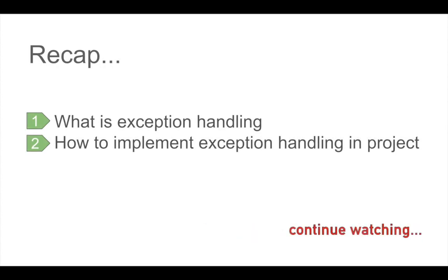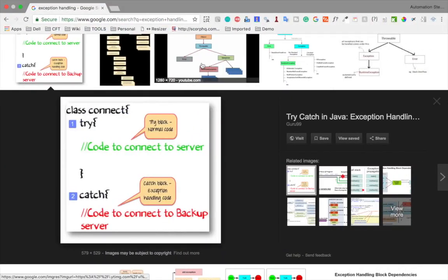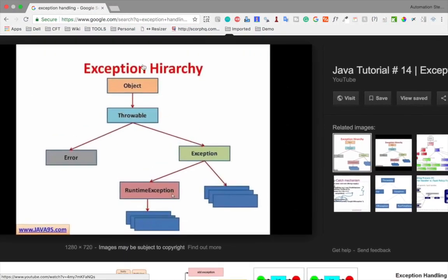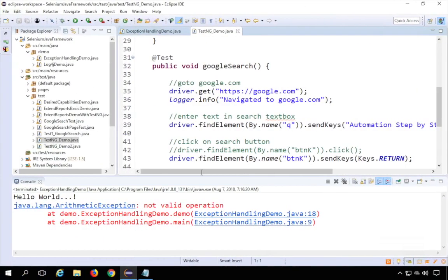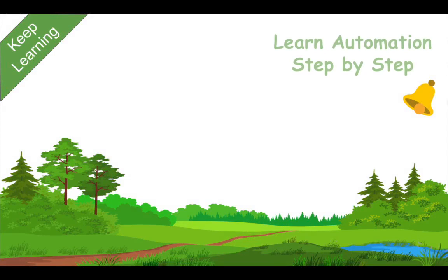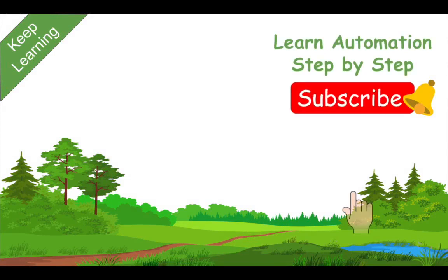That was all about exception handling. Let me do a quick recap. Also, in the exception class hierarchy: Throwable is the superclass, which has Error and Exception. We cannot handle Errors in Java — things like OutOfMemoryError or StackOverflow — but Exceptions we can handle. Exceptions include RuntimeException and checked exceptions. I hope this session was very useful. Please hit the like button, share, and subscribe to the channel so you keep receiving new videos.